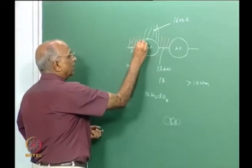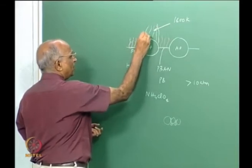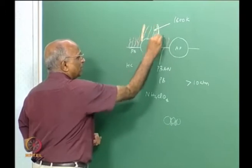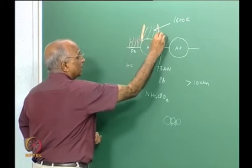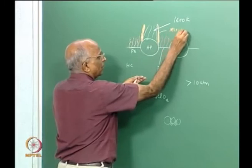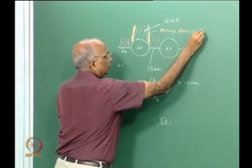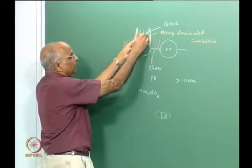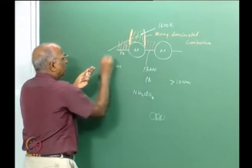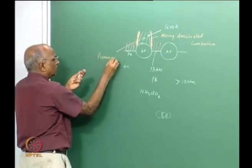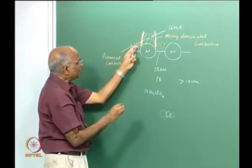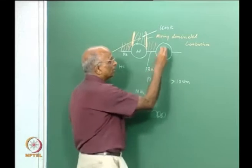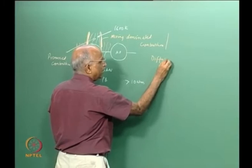I have fuel vapour coming out here and oxidizer-rich vapour from AP. Where the fuel vapour meets the oxidizer-rich flame from AP, burning takes place — this is mixing-dominated or diffusion-controlled combustion. Directly above the AP surface, the decomposition products are already mixed, so I have premixed combustion — no mixing involved. At the edges where fuel vapour and oxidizer-rich vapour meet, I have diffusion-controlled combustion.